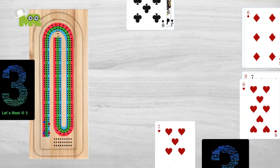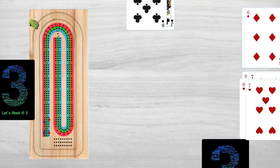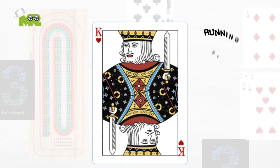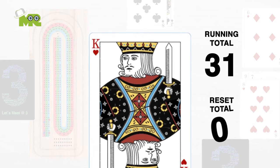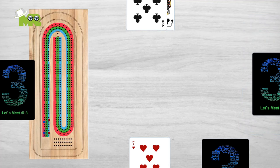If a player plays a card and the running total becomes exactly 31, two points are awarded. After the running total becomes 31, the total resets to zero. The cards that have been played are turned face down and a new round starts with the player who said go.